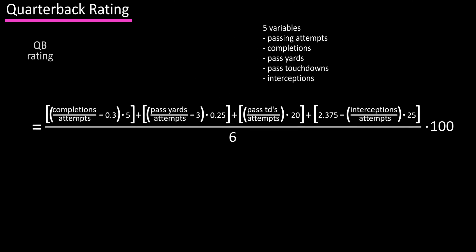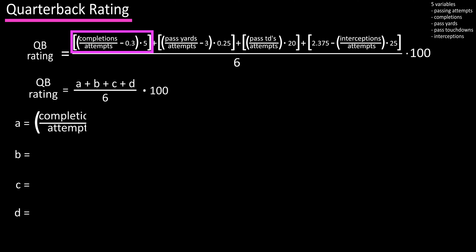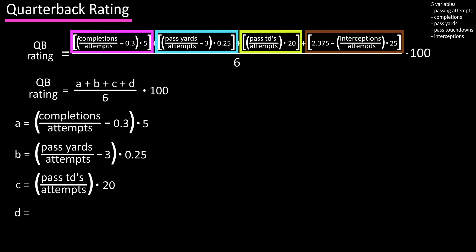To make this easier, we can shorten the equation to (A + B + C + D) divided by 6, times 100. A equals the first quantity: completions divided by attempts minus 0.3, times 5. B equals the second quantity: passing yards divided by attempts minus 3, times 0.25. C equals the third quantity: passing touchdowns divided by attempts, times 20. And D equals the fourth quantity: 2.375 minus interceptions divided by attempts, times 25.